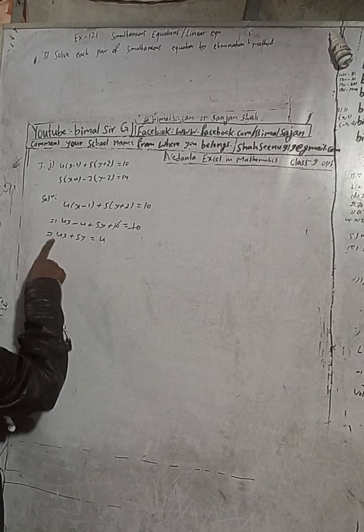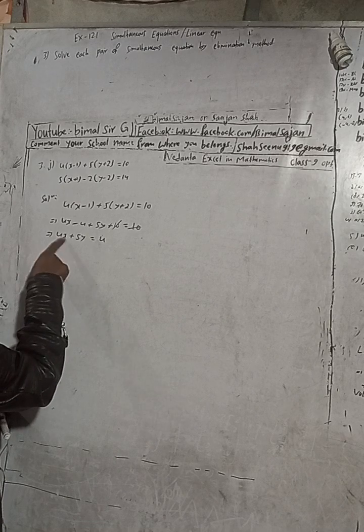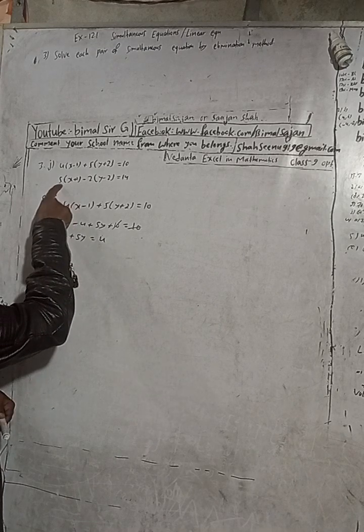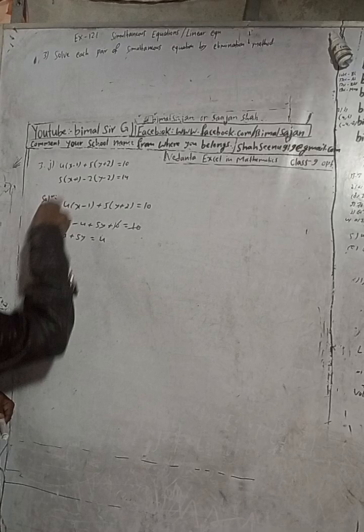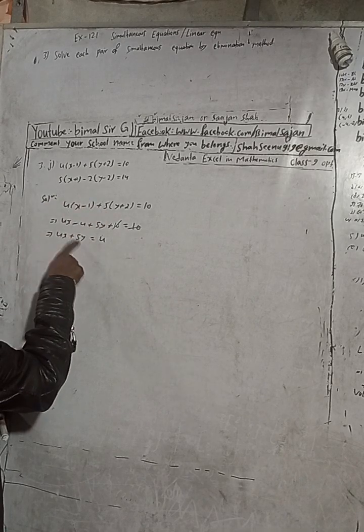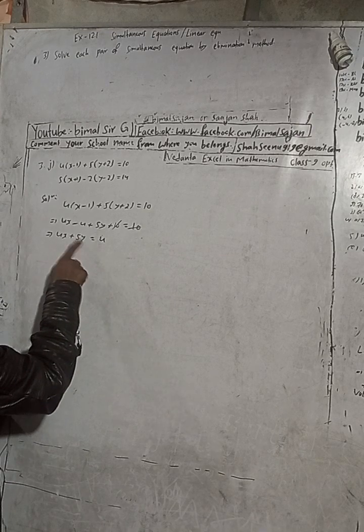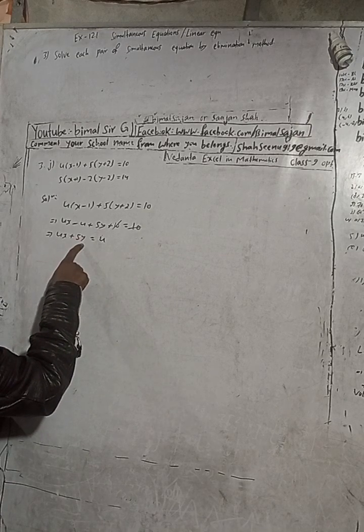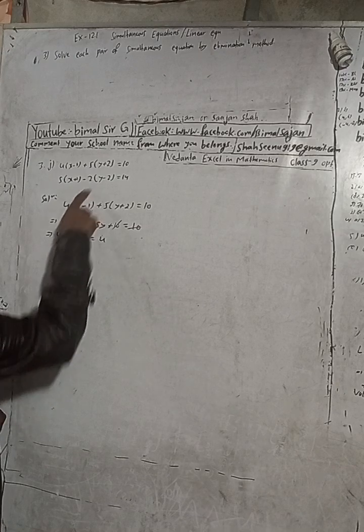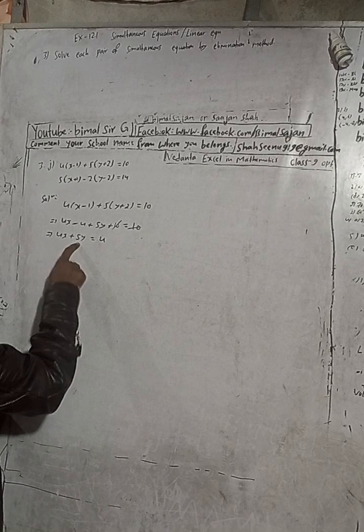You can see here the coefficient of x is 4, but when we solve this, the coefficient will be what? 5. This is different, and here the coefficient will be minus 2y, and the coefficient is 5 plus 5. So what I will do? I will multiply this equation with 5 and this equation I will multiply with 2.